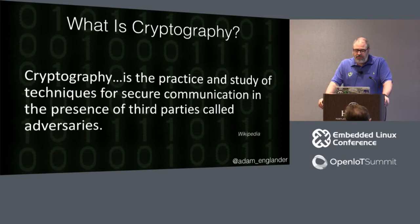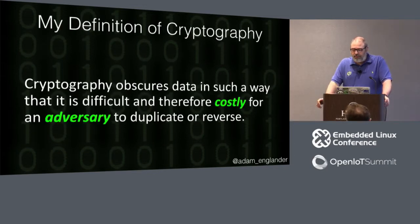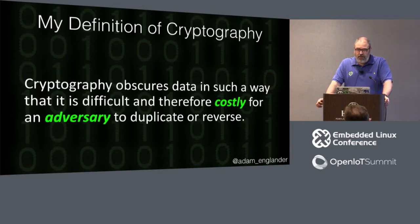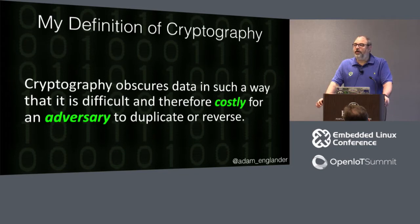Cryptography — for a lot of you — at least some idea what cryptography is, but it is the practice and study of techniques for secure communications in the presence of third parties called adversaries. What that really means is you're trying to obscure data in such a way that it's difficult — and therefore costly — notice it does not say impossible, it says difficult and costly — for an adversary to duplicate or reverse. No cryptography is foolproof; time avails us all.